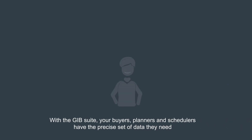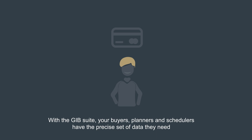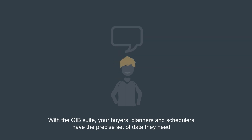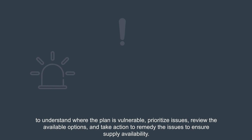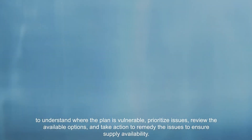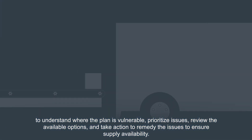With the GIB Suite, your buyers, planners, and schedulers have the precise set of data they need to understand where the plan is vulnerable. Prioritize issues, review the available options, and take action to remedy the issues to ensure supply availability.